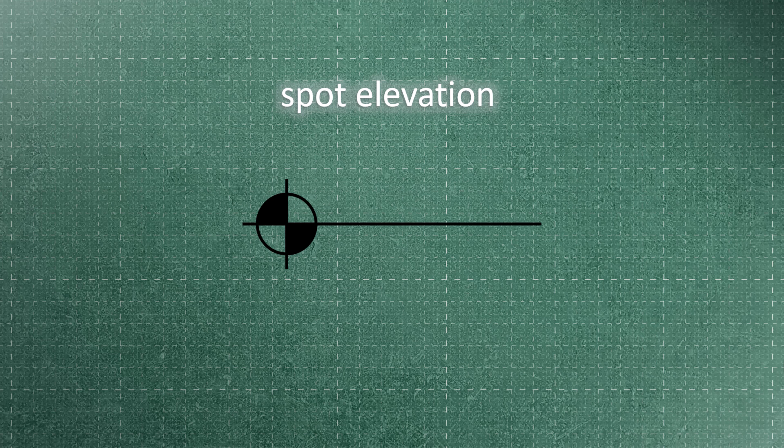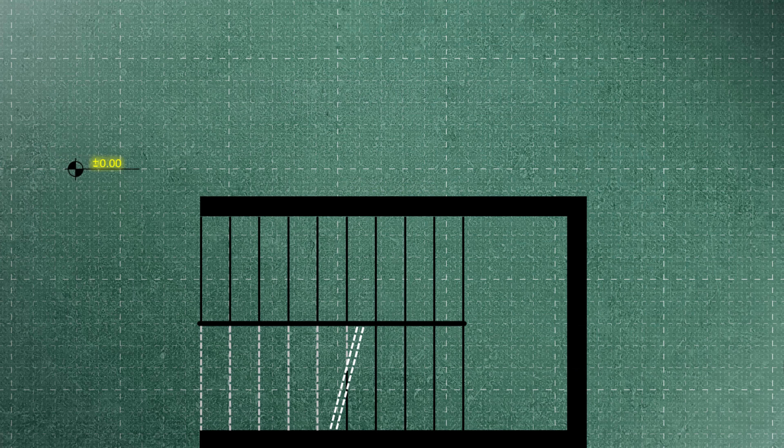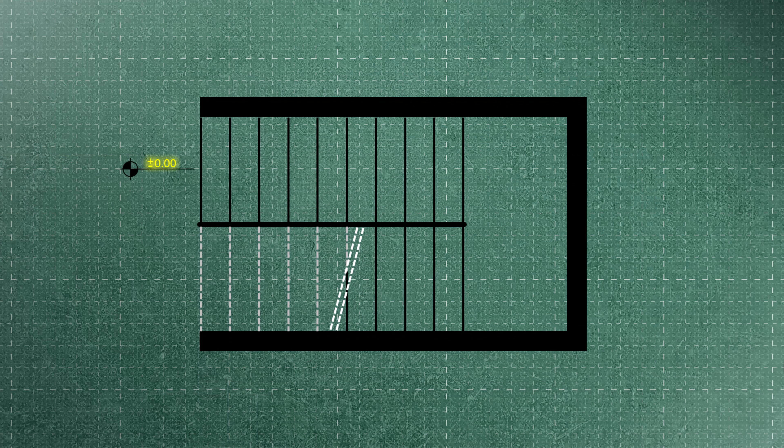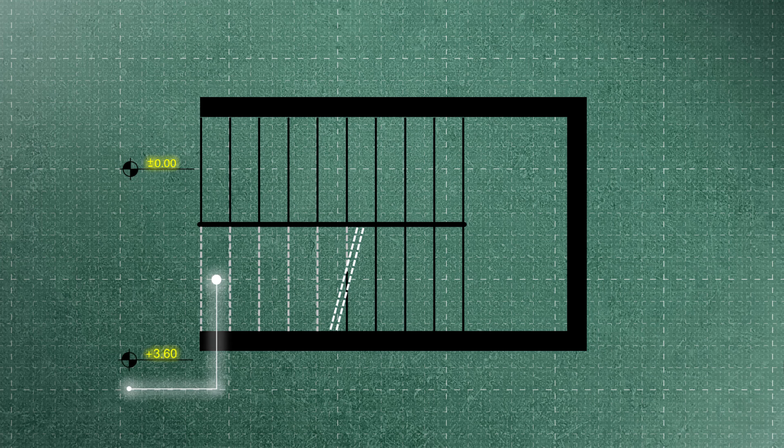To indicate the height of the stairs, a symbol called spot elevation is utilized in the plan. The base elevation code is always considered as 0.00. For instance, if we designate the first point of our stairs as the base code and our highest point reaches 360 centimeters, then the spot elevation code for the middle landing would be 180 centimeters.